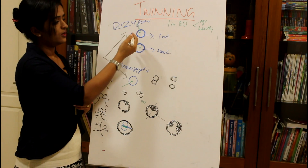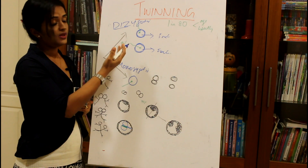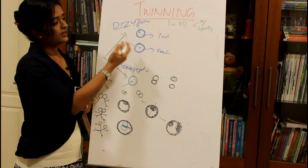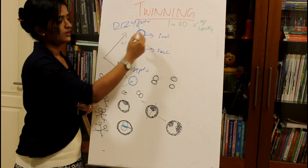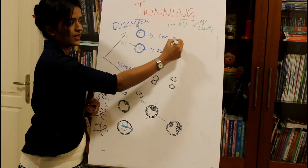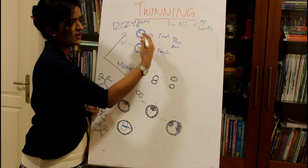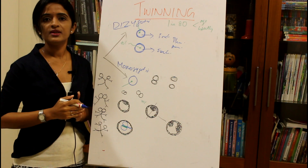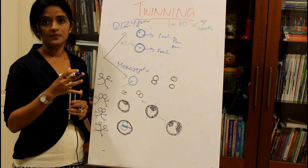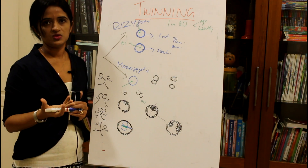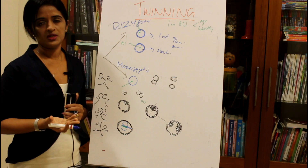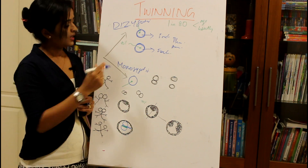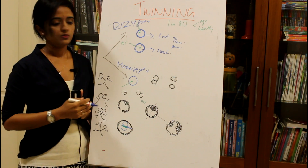In dizygotic twins, the two zygotes developing into fetuses won't share anything in common. They can be the same sex or different sex, they will have separate genetic constitution, separate placenta, and separate amniotic cavity — everything is separated. They are just like siblings developing in a single intrauterine period.